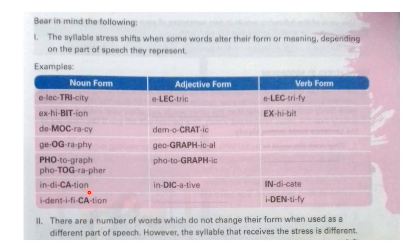Now, 'indication' — the stress falls on the second syllable from the right. 'Indicative', that is the adjective, falls on the third from the right. 'Indicate' — the stress falls on the third from the right. Then 'identification': when '-ion' is there, before it, whatever syllable you find, the stress falls there. And where you have '-grapher' or '-graph', the stress falls on the third.